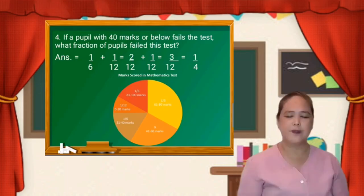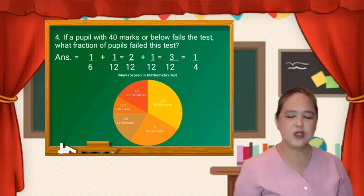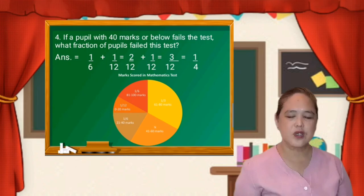For number 4, if a pupil with 40 marks or below fails the test, what fraction of the pupils failed this test? We have 1/6 plus 1/12. So let us get first the least common denominator of 6 and 12 because they are dissimilar fractions. The LCD is 12. So 12 divided by 6 is equal to 2, times 1 is equal to 2. And 12 divided by 12 is equal to 1, times 1 is equal to 1. We can now add the numerators: 2 plus 1 is equal to 3 over 12. Then reduce to lowest term: the answer is 1/4, dividing numerator and denominator by 3. So the answer for number 4 is 1/4.